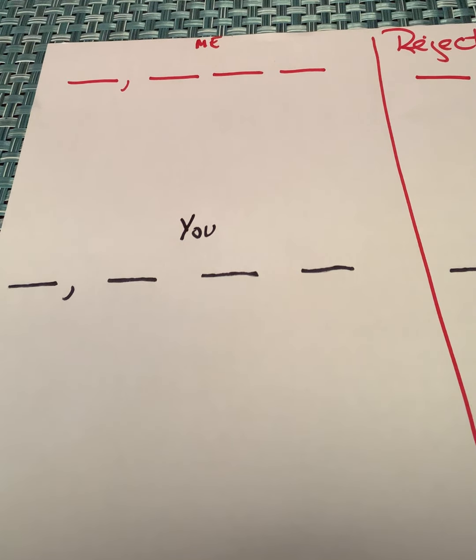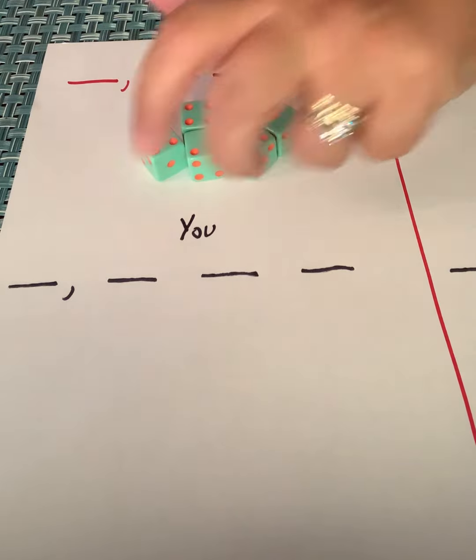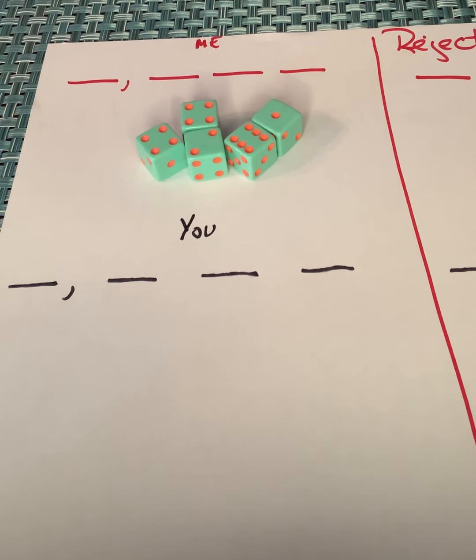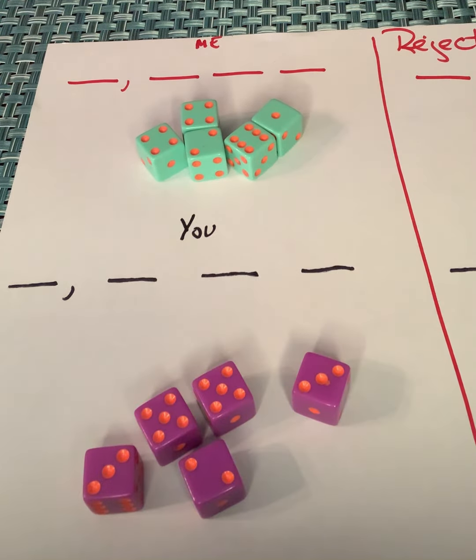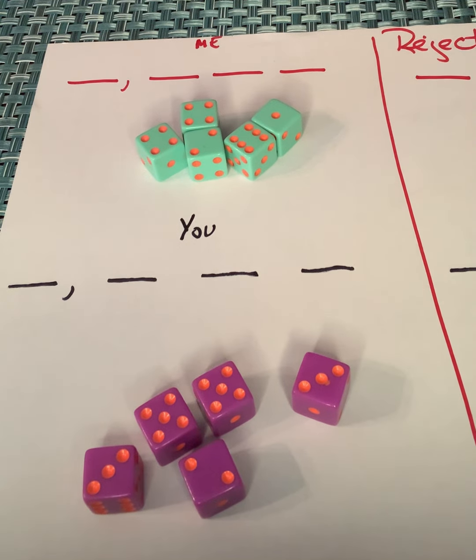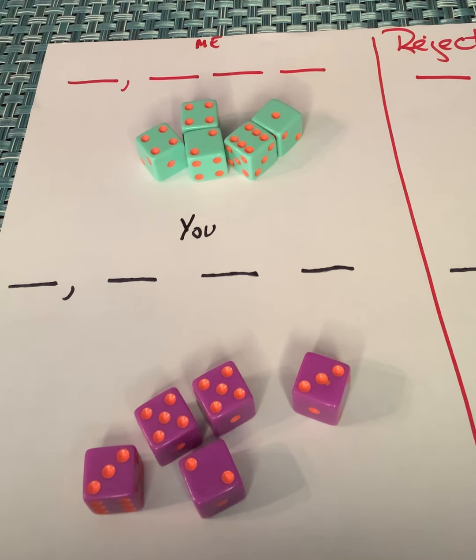Okay, now usually I play this game and we just write in the numbers as we roll them. But I thought, one, because it's hard for me to write upside down, and two, it's also a lot more fun for you guys to look at things visually with different colored dice. I'm going to roll the dice and use the dice instead of write today.